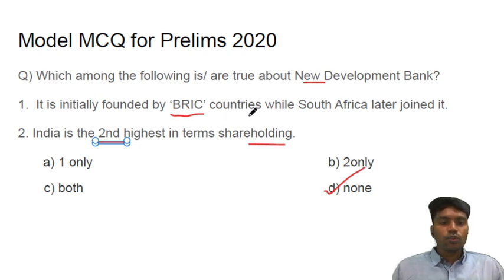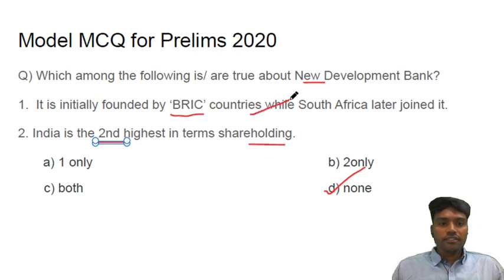What I learned about this tick term: UPSC basically tends to confuse you by giving facts about the same institution that are actually about a different aspect. And the second trick is to apply common sense while solving.